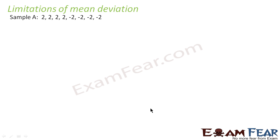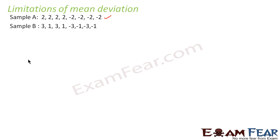We will see one example. Let's suppose we have two samples. First sample A is the data: 2, 2, 2, 2, -2, -2, -2, -2. Second sample B is: 3, 1, 3, 1, -3, -1, -3, -1. These are two samples.